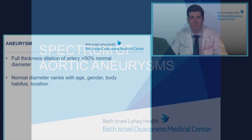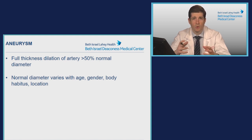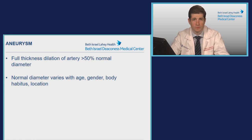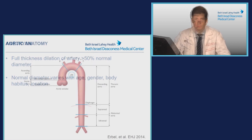What is an aneurysm? It's the full thickness dilation of an artery, which includes the intima, media, and adventitia, and is enlarged to greater than 50% of what would be the expected normal diameter. The normal diameter varies with age, gender, body habitus, and location within the aorta.